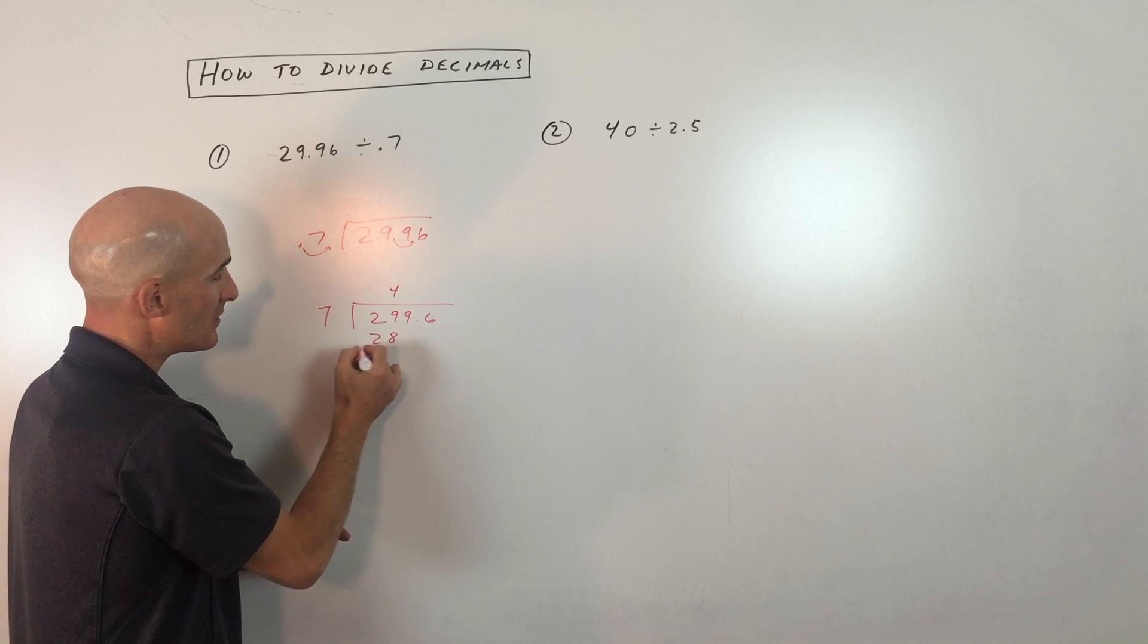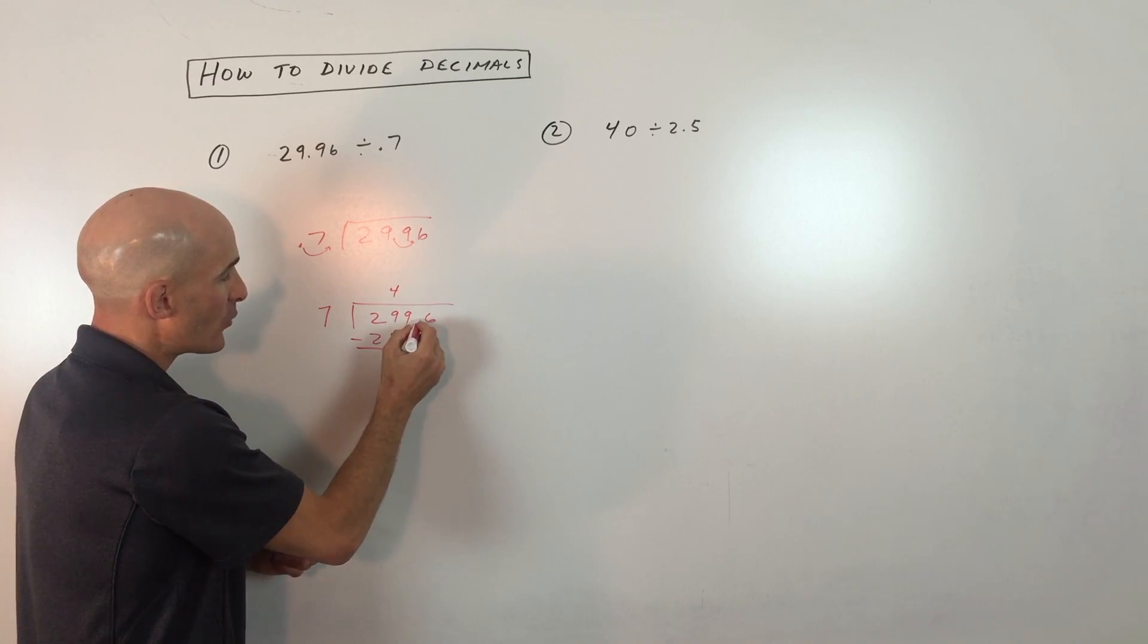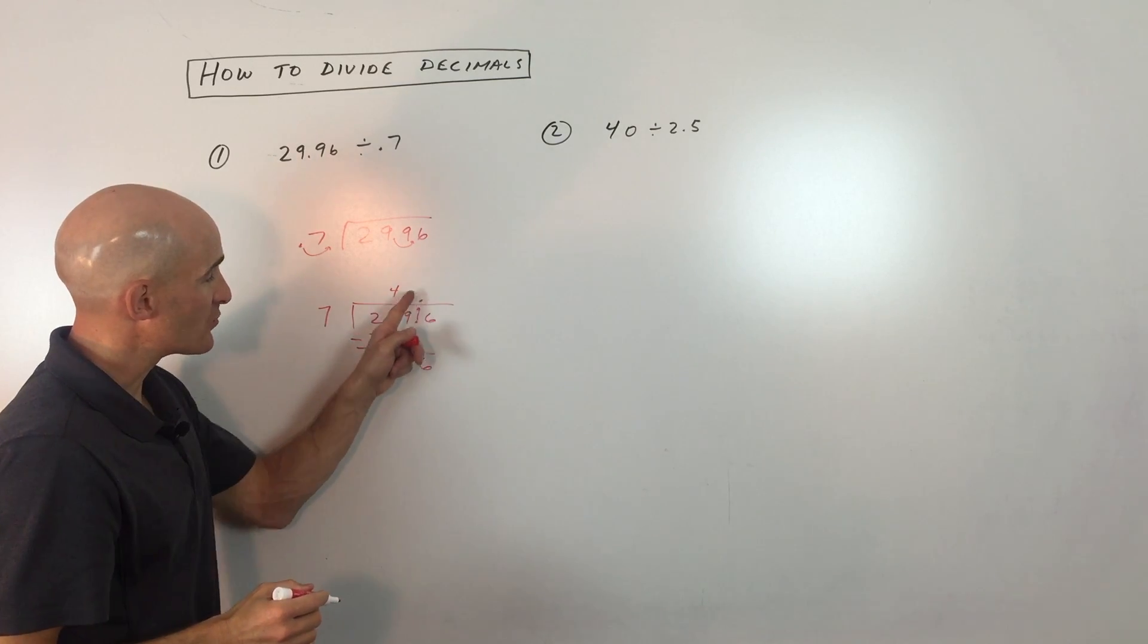4 times 7 is 28. Subtract. That's 1. By the way, this decimal point, you just want to bring straight up and put it on the division bar. I just brought it straight up.